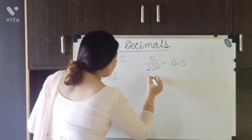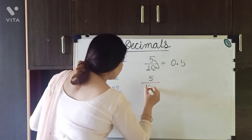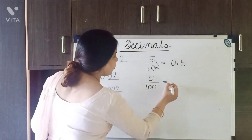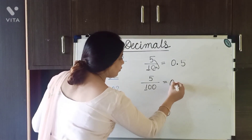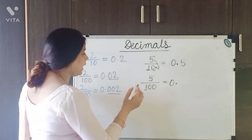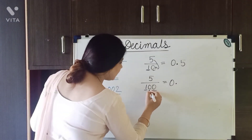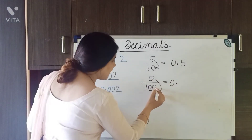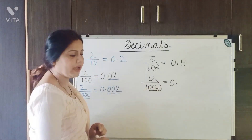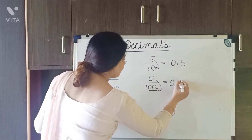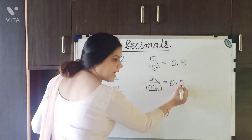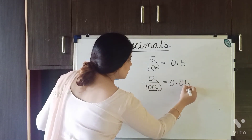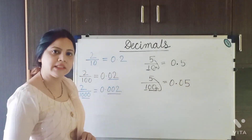If it is 5 upon 100, again we convert the 1 into 0 and give a decimal point. There are 2 digits in the denominator after the 1. The 5 goes at the last place, and the remaining 0 is written as is before it. So this becomes 0.05.